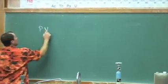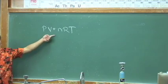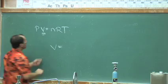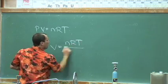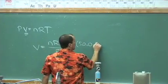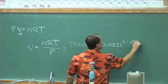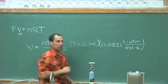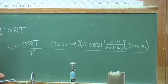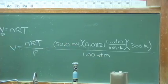I'm going to write down our equation of state: PV equals nRT. We're solving for V, so rearranging, V equals nRT over pressure. Plugging in: n is 50 moles, R is 0.0821 liters times atmospheres over moles times Kelvins, temperature is 300 Kelvin — no unit conversion needed — and pressure is 1.00 atmospheres. In just a moment we'll take out our calculators and solve this.